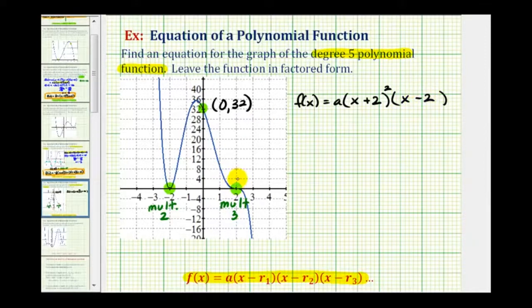But because this is a triple zero, or has multiplicity three, we'd have three factors of x minus two, or the quantity x minus two to the third power. So these must be the factors of our polynomial function, and now we'll use this point here to determine the value of a.